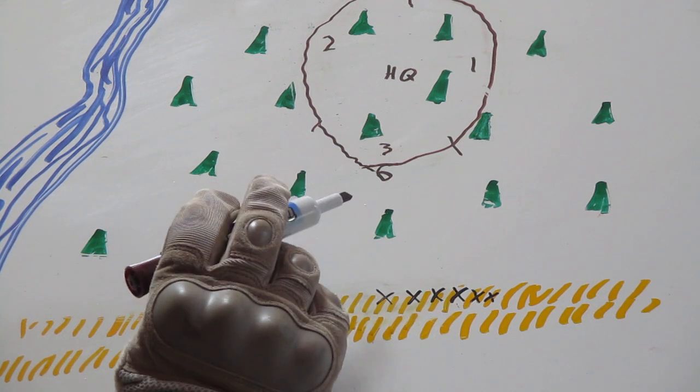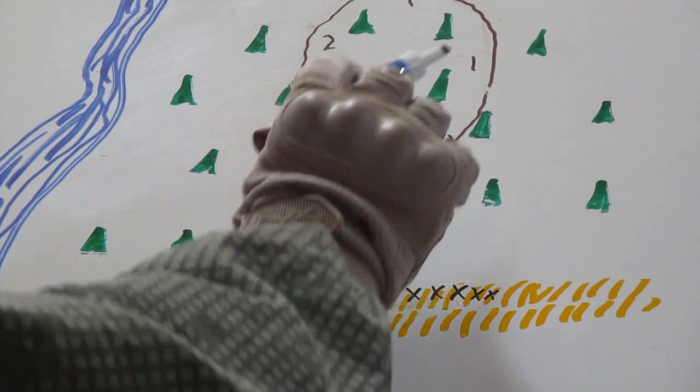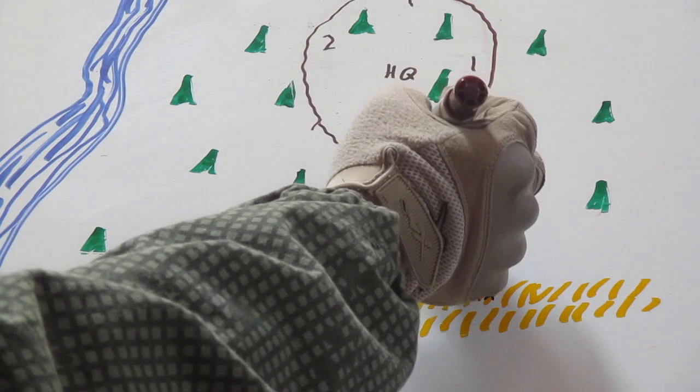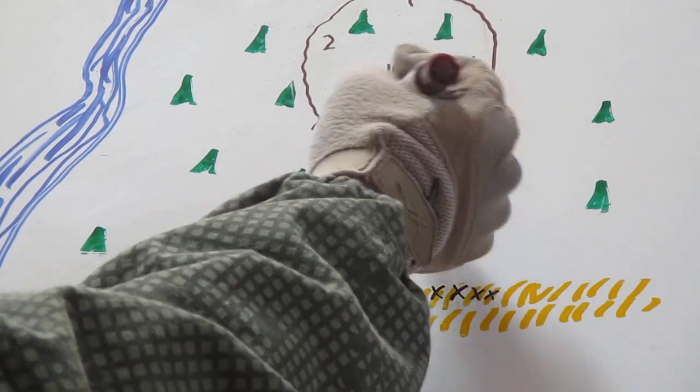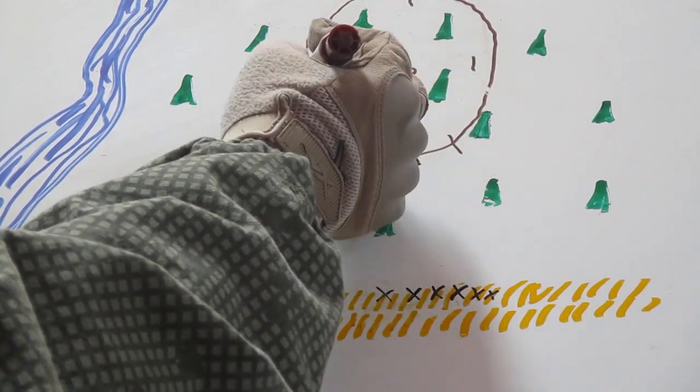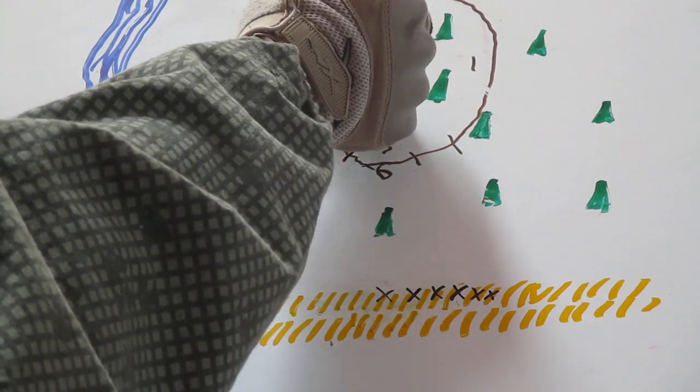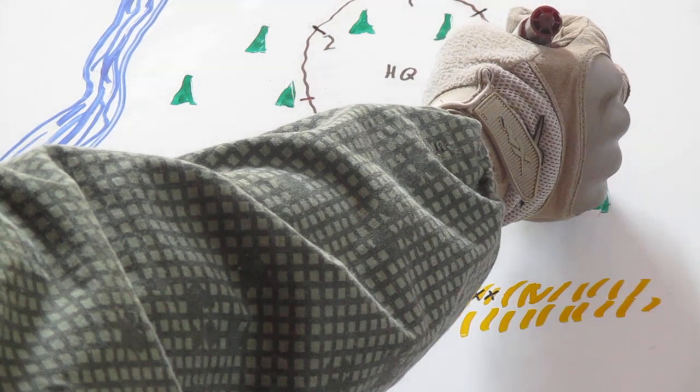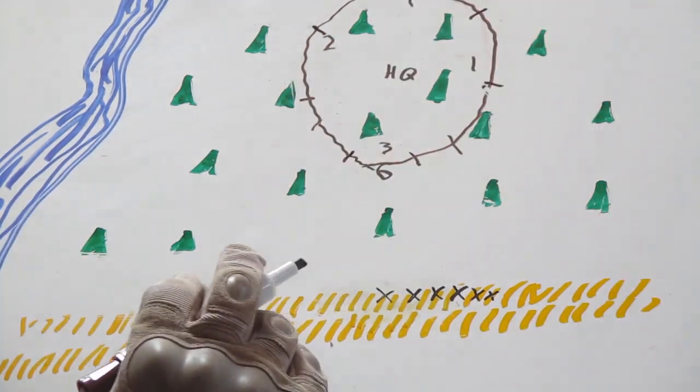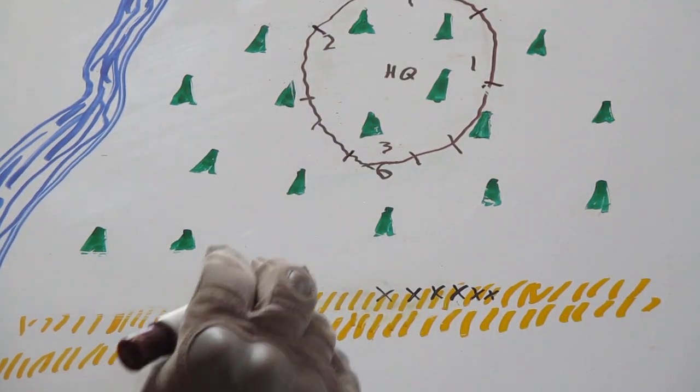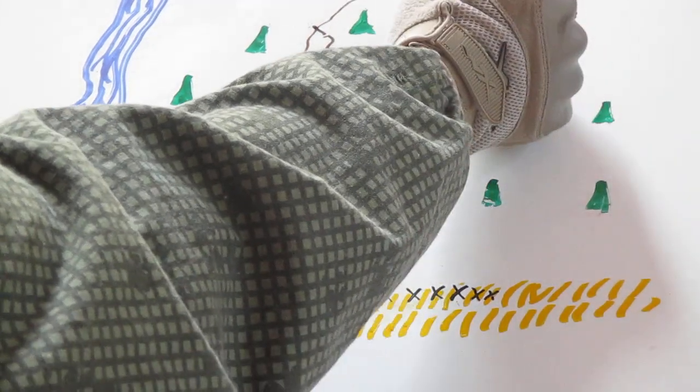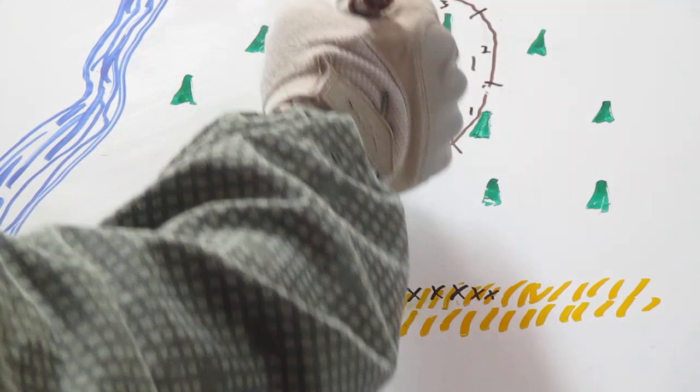Each squad should already be assigned in each platoon sector where they are going to be at, and their troops should already be pulling security inside their squad sectors. So this would be 1st squad 1st platoon, 2nd squad 1st platoon, 3rd squad 1st platoon, and so forth around.